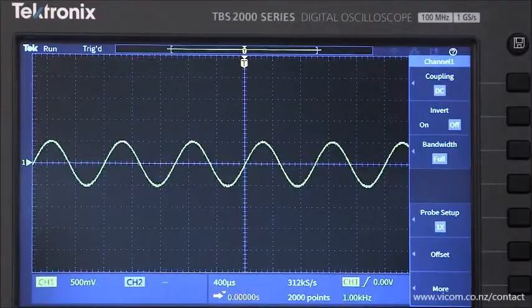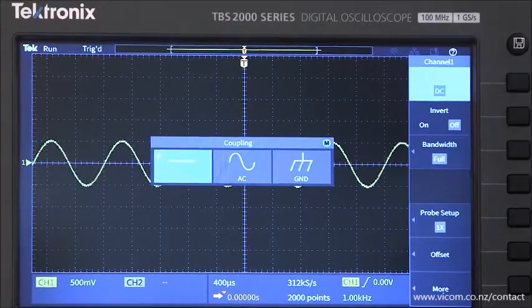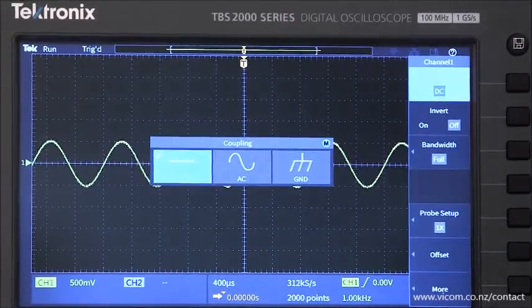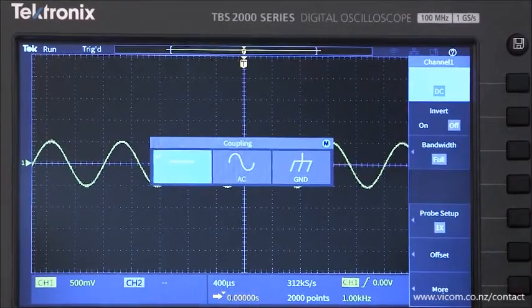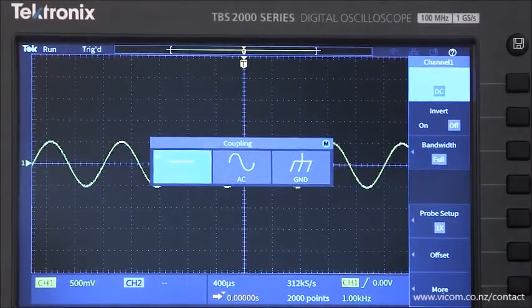Coupling is a useful vertical setting. It defines the way the signal is connected to the oscilloscope input. DC, or direct coupling, passes both AC and DC components of the signal, so you can see any DC offset if the signal has it.